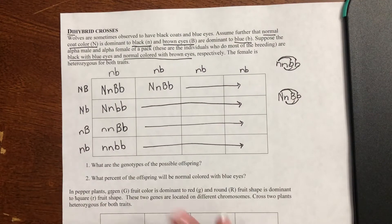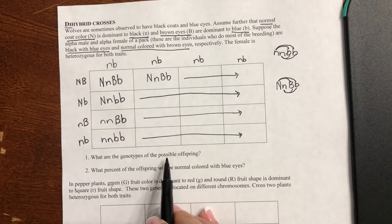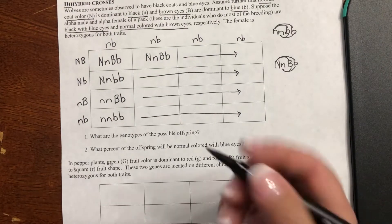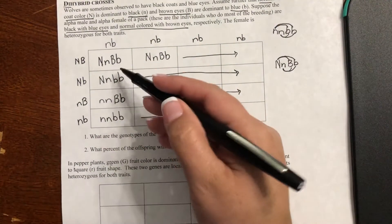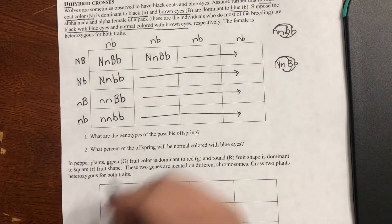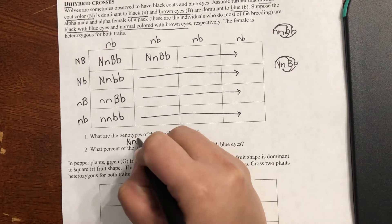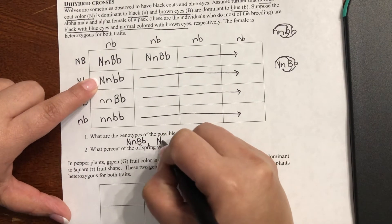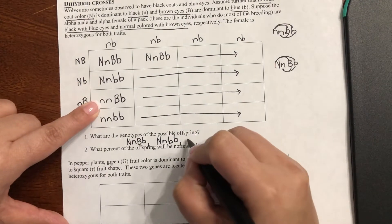And that's how you complete the square. Now, the way you have to interpret this — looking at question number one: what are the genotypes of the possible offspring? There are actually four genotypes that are possible. The four possible genotypes are: capital N, lowercase n, capital B, lowercase b — that's the first one. Then the second one is right here. Then the third one right here. And then the fourth one is right here.